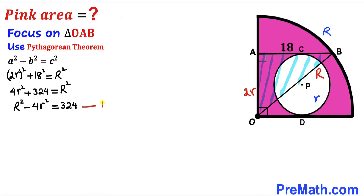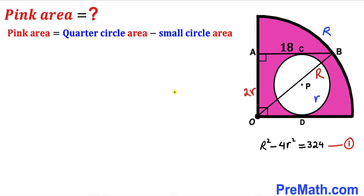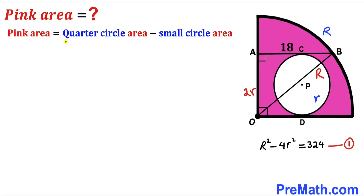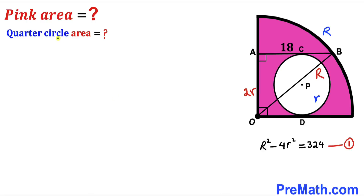Looking at Equation 1 and our diagram: the pink shaded area equals the area of the quarter circle minus the area of the smaller white circle. Our task is now to calculate each of those areas.